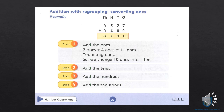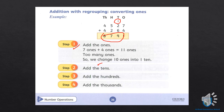In the last example, we have an addition question where the ones add up to eleven. Since we have more than ten ones, we change one group of ten ones into a ten — we carry it forward. Then we place the digits in the ones, tens, hundreds, and thousands places accordingly.